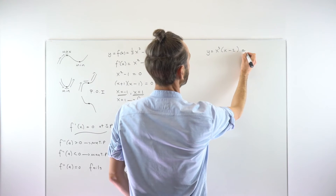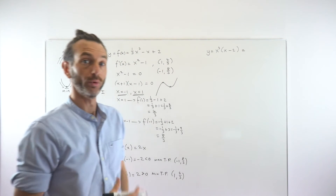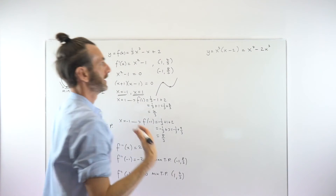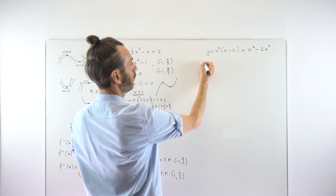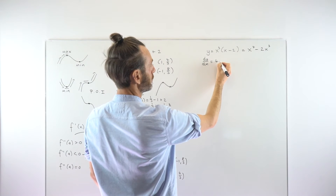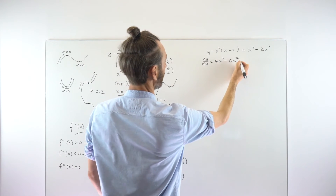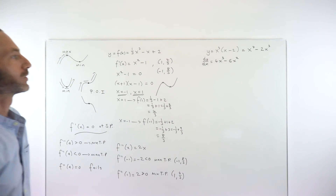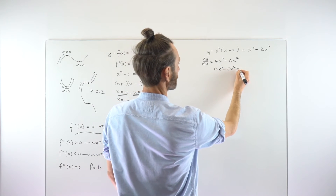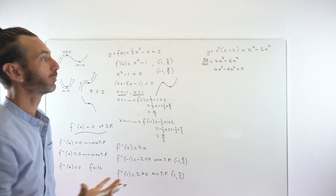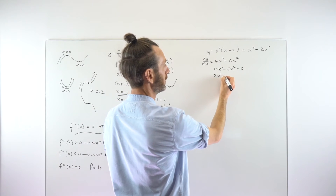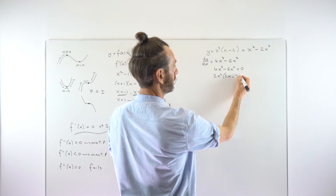This second function is in a non-differentiable form because of the bracket, so we need to expand it first: that gives x to the power of 4 minus 2x cubed. Then we take the derivative using the power rule, writing it in dy/dx notation: 4x cubed minus 6x squared. We set that equal to zero to find the stationary points.